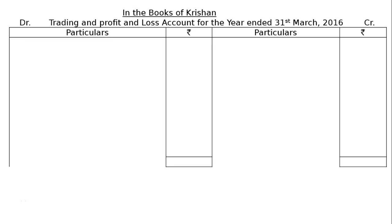The question gives the Trial Balance of Christian on 31st March 2016. We have to prepare the Trading and Profit and Loss Account and Balance Sheet after making the given adjustments — six adjustments are provided along with the trial balance. We will draw the format in the books of Christian: Trading and Profit and Loss Account for the year ended 31st March 2016.